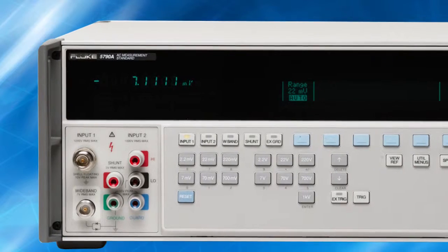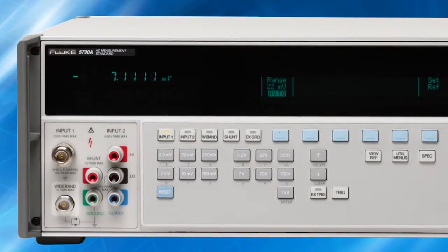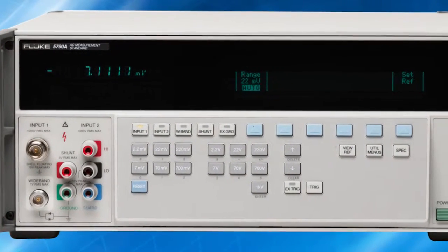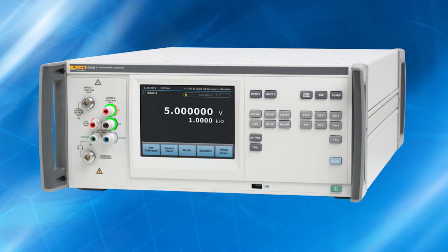Since its release in 1990, the 5790A has been the go-to product for precise AC voltage measurements around the world. The new 5790B has all the features and performance characteristics of the previous 5790A and we have added five important new features.